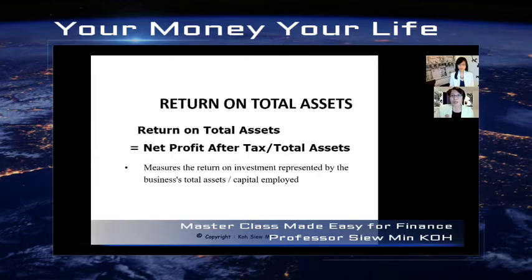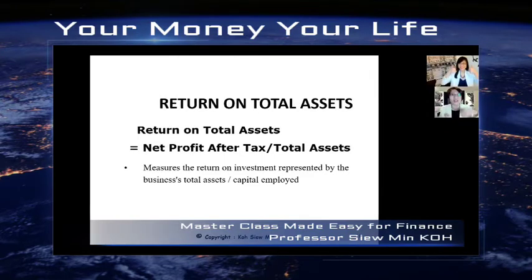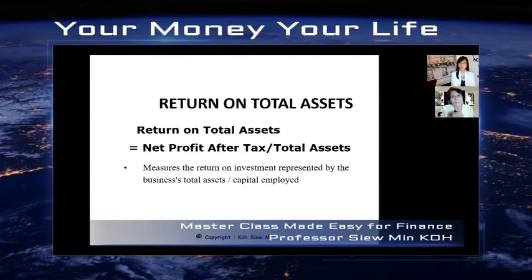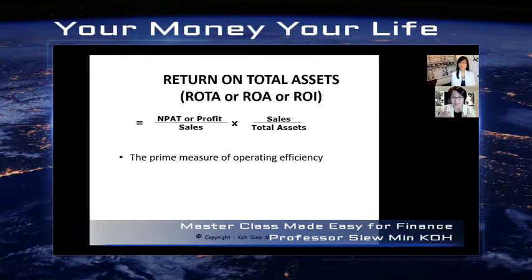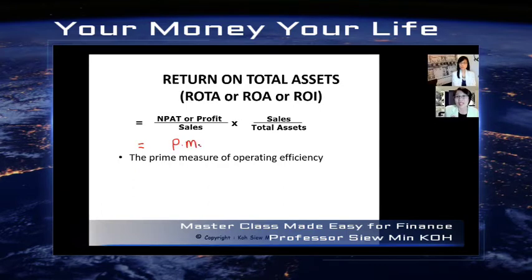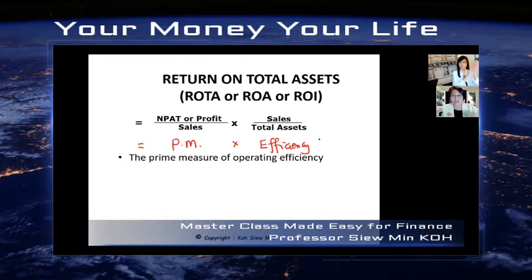The next step I'm going to bring you to is to combine — combine this turnover to get what we call return on assets. If you recall, Vicky is my best student. She wants to know what is my return per dollar of assets, and this is a function of two ratios. The first ratio is what I introduced yesterday — it's called profit margin, abbreviated as PM. The second is called the activity ratio — productivity or efficiency. How efficient are you in turning around fast enough? The faster, the better.